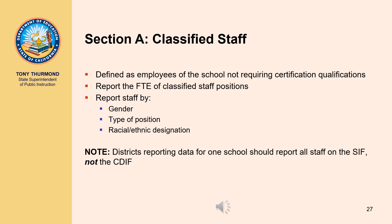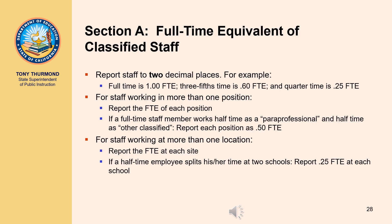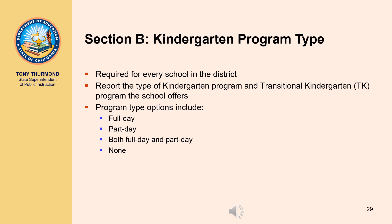Single school districts are to report all staff on the SIF, not the CDIF. When reporting classified staff, report FTE counts to two decimal places. For example, full-time would be reported as 1.00 FTE, three-fifths time as .60 FTE, and a quarter-time as .25 FTE. For classified staff working in more than one position, report the FTE of each position — if a full-time staff member works half-time as a paraprofessional and half-time as other classified, report each as .50 FTE. For classified staff working at more than one location, report the FTE at each site — if an other classified position is half-time and assigned to two schools, report .25 FTE at each school.